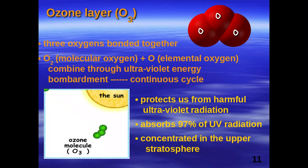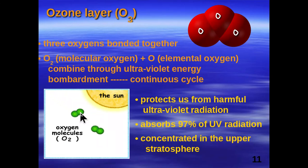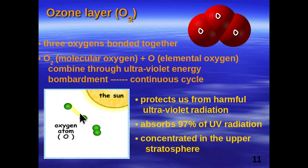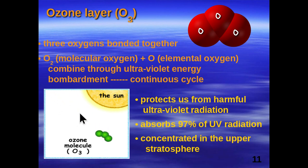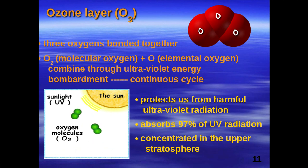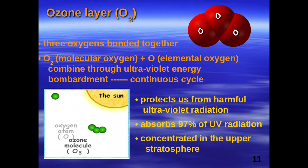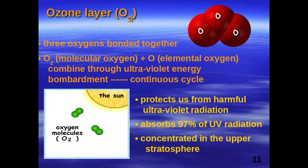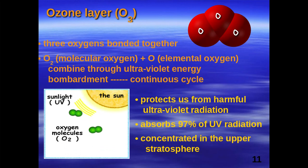This is a continuous cycle that takes place up in the stratosphere, and 97% of UV radiation is absorbed in the stratosphere. We only get 3%. The stratosphere heats up because the ozone absorbs the sun's radiation, and this is very important for organisms living on Earth. Ozone is pretty important.